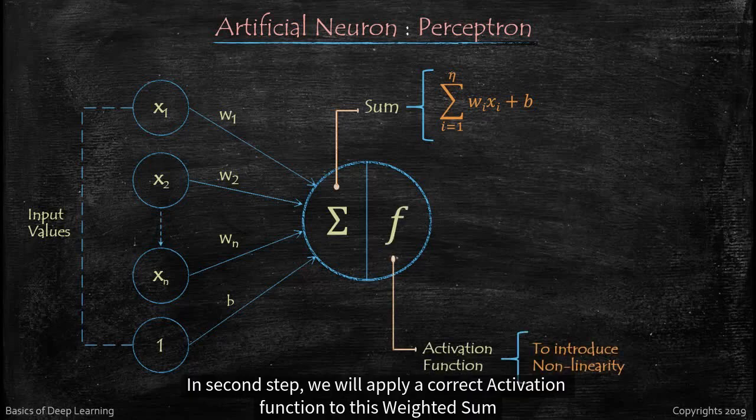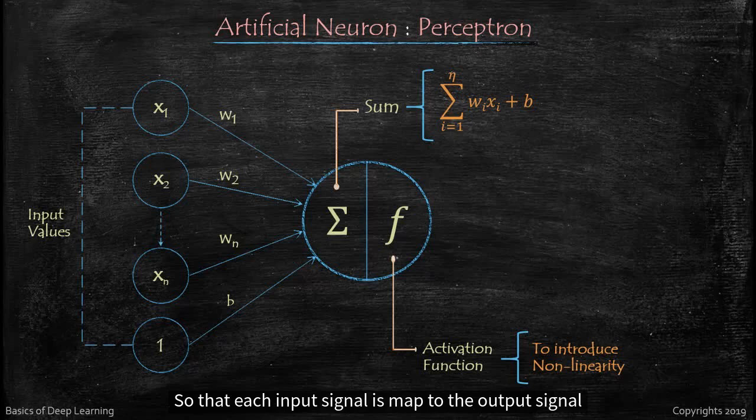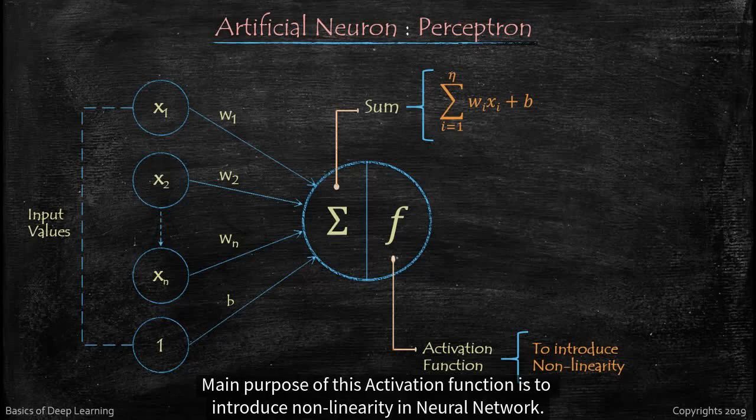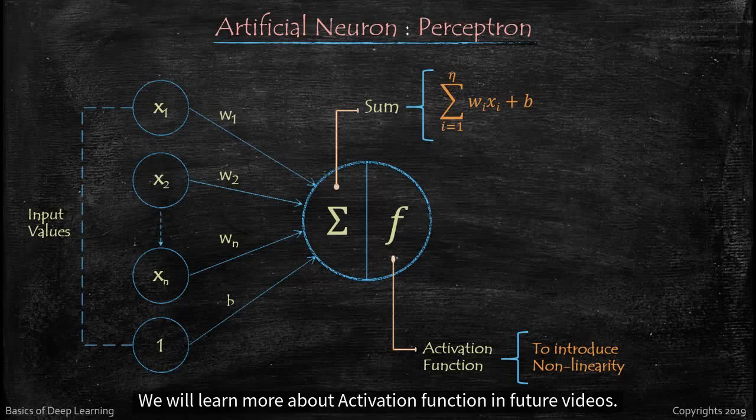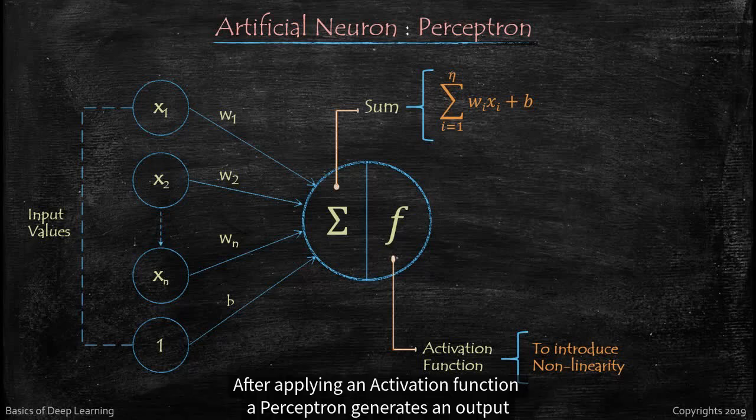And second step, we will apply a correct activation function to this weighted sum so that each input signal is mapped to the output signal. Main purpose of this activation function is to introduce non-linearity in neural network. We will learn more about activation function in future videos. After applying an activation function, a perceptron generates an output.